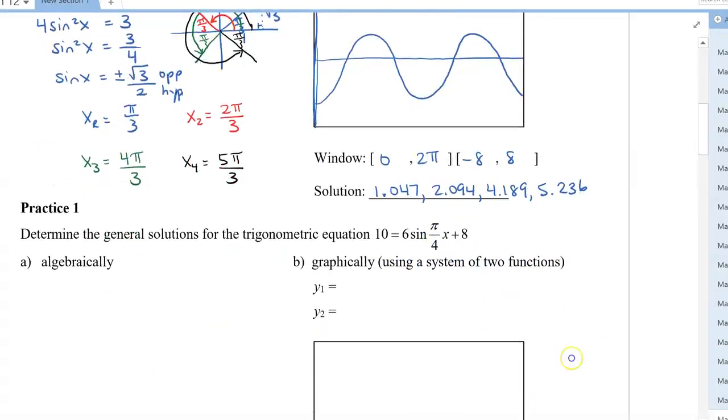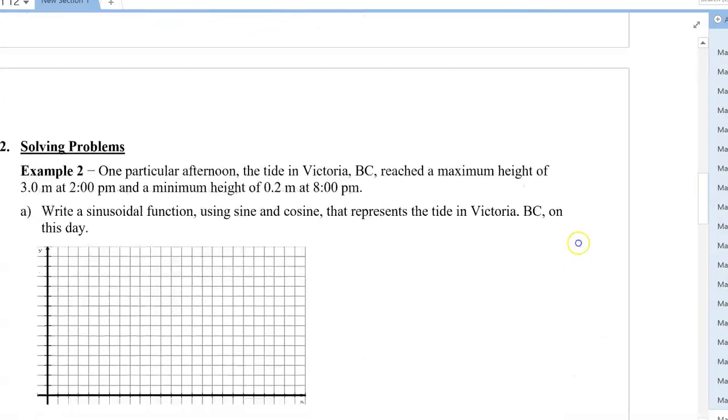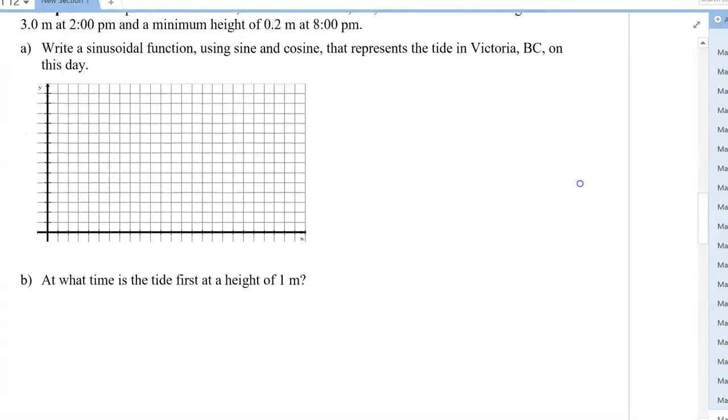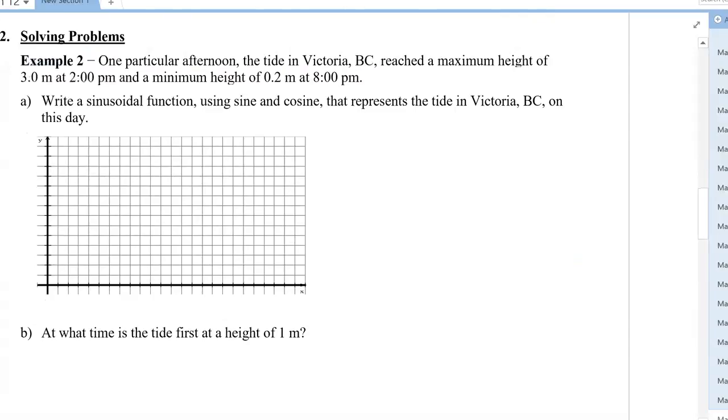Let's take a look at an example that's more application-based since that's the useful part of sinusoidal functions. One particular afternoon, the tide in Victoria reached a maximum height of 3 meters at 2 p.m., and a minimum height of 0.2 meters at 8 p.m. I want to write a sinusoidal function using sine and cosine to represent the tide. Let's take a look at how I can make my scale. There's 15 squares, so I'll place 1 here, 2, and then 3 at the very top.